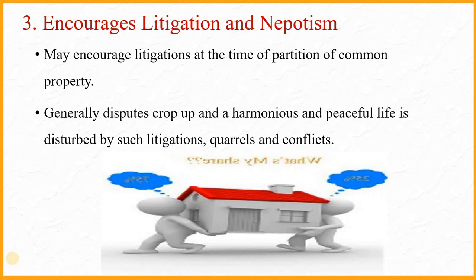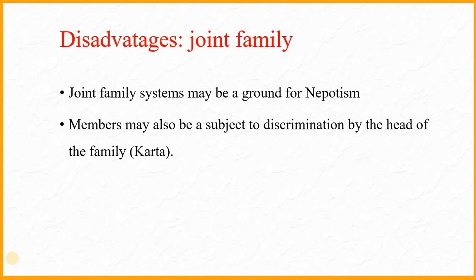When a joint family has disputes, they may take a very ugly shape. Another disadvantage is that it may be a ground for nepotism, which is a kind of favoritism practiced by the head of the family — the Karta — at the cost of other family members. The Karta may make unjust decisions towards somebody they like more than others. Members may also be subject to discrimination by the head of the family.